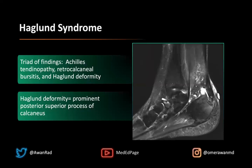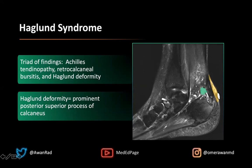Some people get confused about what is the difference between the Haglund deformity and the Haglund syndrome. The Haglund syndrome is the triad of findings. It represents the combination of the Haglund deformity — the prominent posterior superior process of the calcaneus — but there's also retrocalcaneal bursitis and then Achilles tendinopathy, or thickening and degeneration of the distal Achilles tendon.